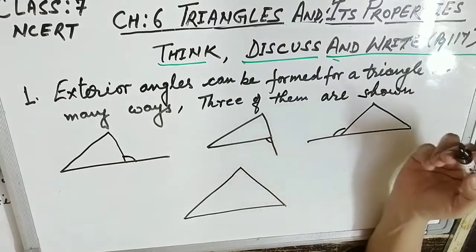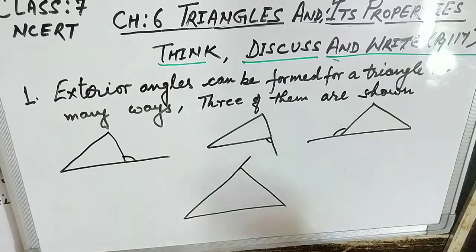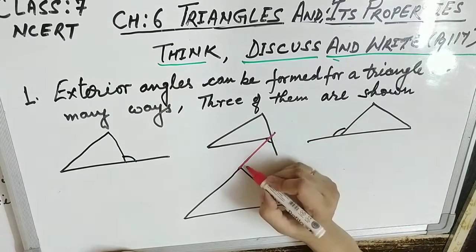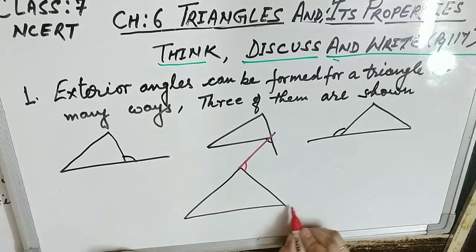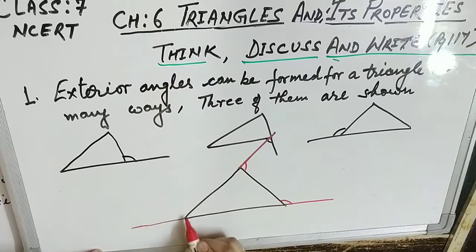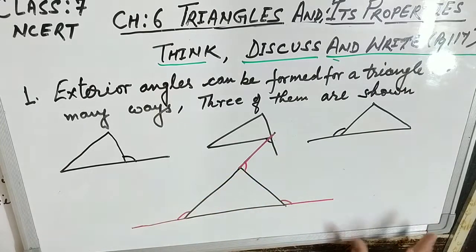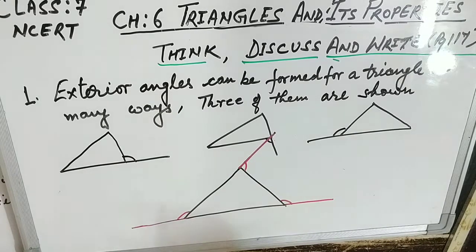If you extend this line, you will get an exterior angle. If you extend another line, you will get another exterior angle. Similarly, if you extend lines at other vertices, you can get various exterior angles. So this way you can have multiple ways of getting exterior angles — there's no big deal about that.